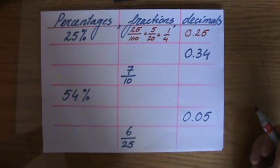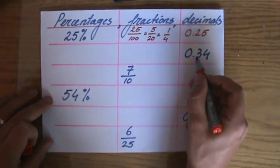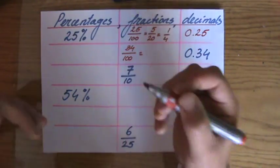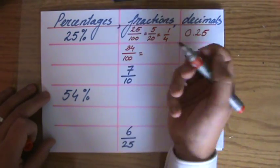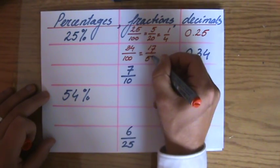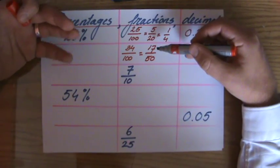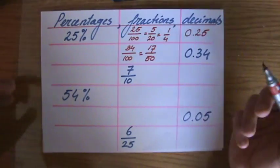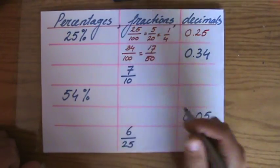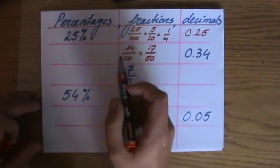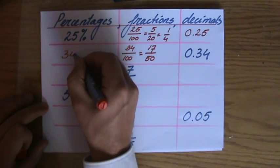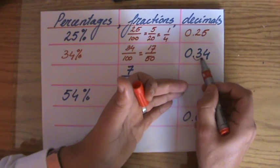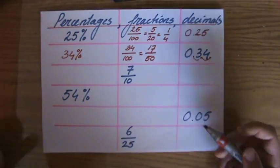A little bit quicker now. 0.34 as a fraction: tens, hundreds — so 34 hundredths. Make sure you always simplify that. They're both even, so I can divide them both by 2: 17 over 50. Well, 17 is a prime — if you know what primes are, otherwise check out one of my other videos — and I cannot divide 50 by 17, so that's the simplest form. As a percentage: 34 out of 100, so that is 34%. 0.34 times 100% equals 34%.